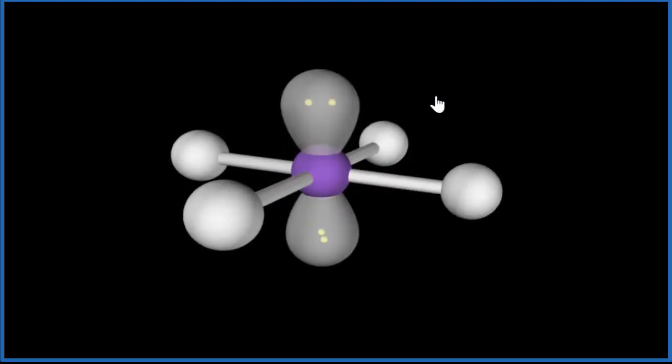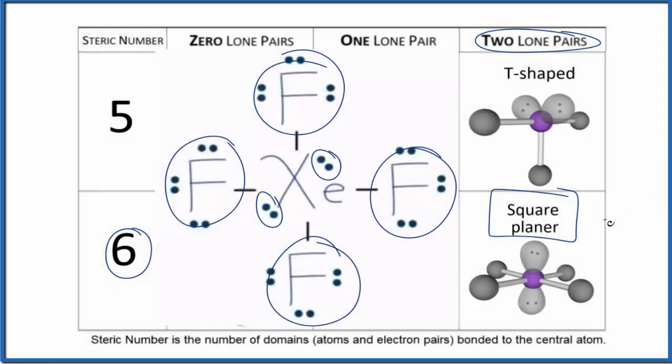Let's go back. We can also use the AXE notation when we're looking at square planar. We'll have the central atom, that's the A, the atoms that are bonded to it, that's X, and then the lone pair, we put E. So we have A, and then we have one, two, three, four for the X.